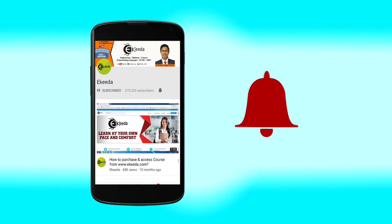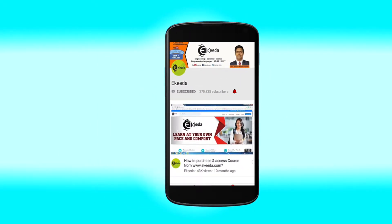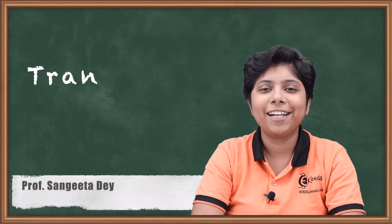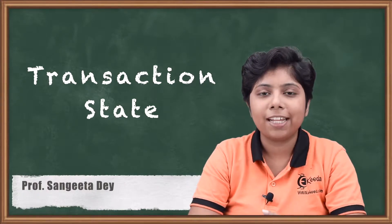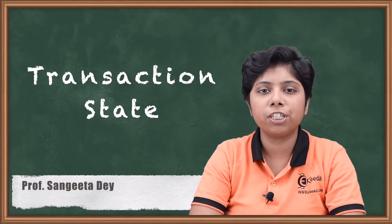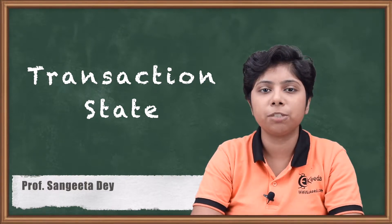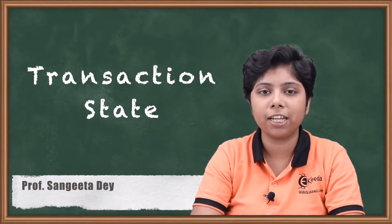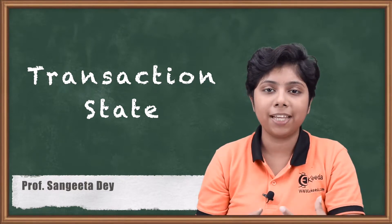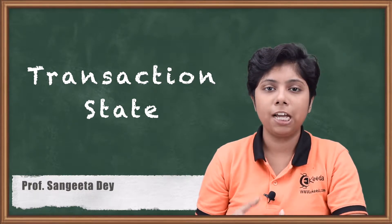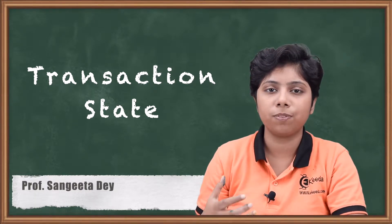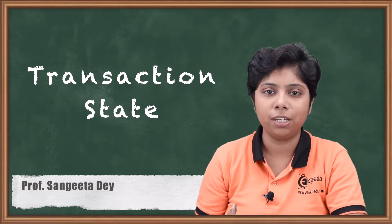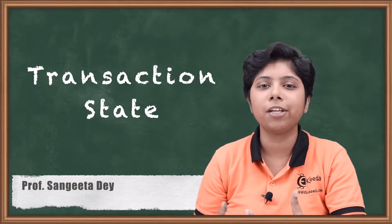Hello friends, today we will talk about transaction states. We will first understand how transactions become atomic and durable, and from atomicity and durability, how transactions can be in each of the states that we will describe today and how they can be correlated with each other.